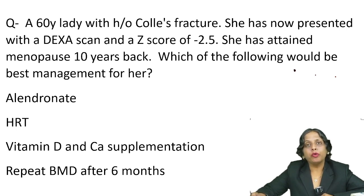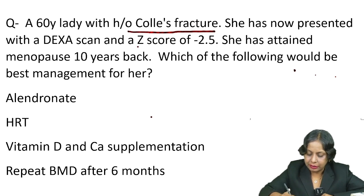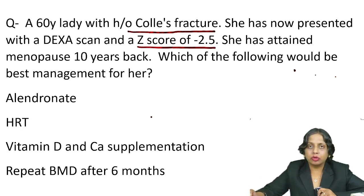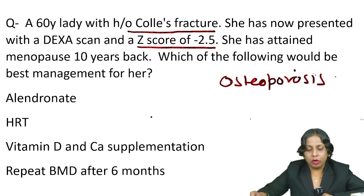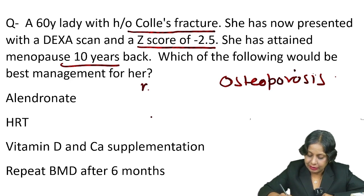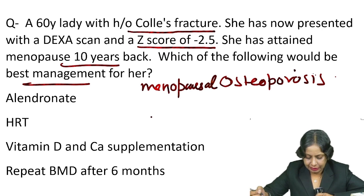Hello everyone, let's take one PYQ topic. The PYQ is: a 60-year-old lady with a history of Colles' fracture and a Z-score of minus 2.5. This Z-score of minus 2.5 indicates that the patient has osteoporosis, and she has attained menopause 10 years back, so it clearly indicates that this is a case of menopausal osteoporosis. They have asked what is the best management for her.